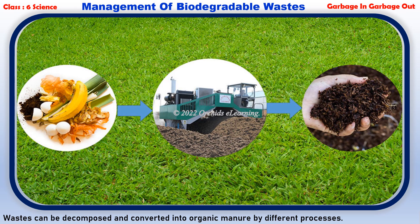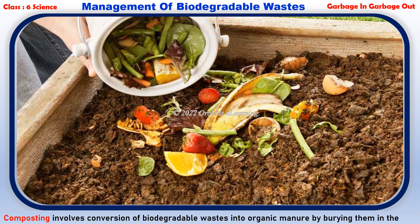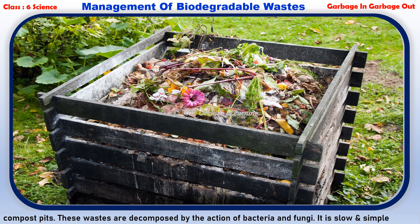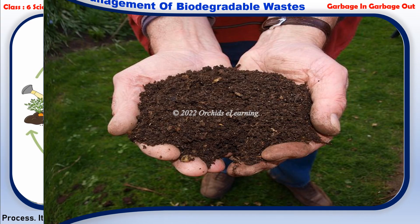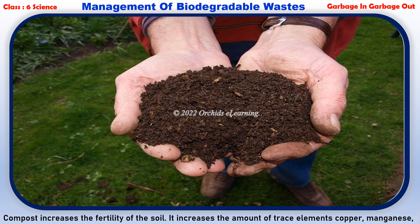Waste can be decomposed and converted into organic manure by different processes. Composting involves the conversion of biodegradable wastes into organic manure by burying them in compost pits. These wastes are decomposed by the action of bacteria and fungi. It is a slow and simple process that causes no harm to the environment. Compost increases the fertility of the soil.